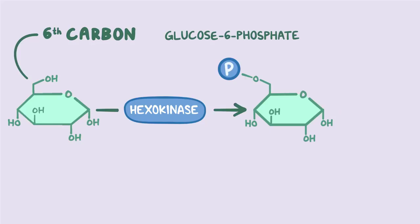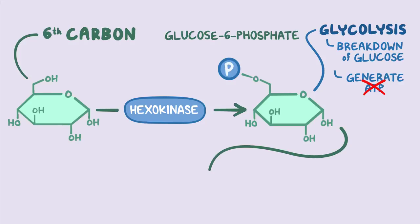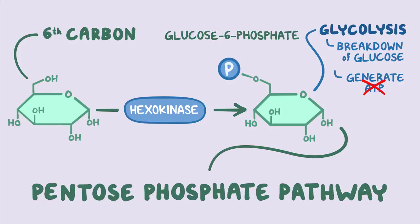From there, the cell has the option to take glucose through a metabolic pathway called glycolysis, which is the breakdown of glucose to generate ATP. But if the cell doesn't need ATP, glucose can be used to make some other useful products by entering an alternative metabolic pathway called the pentose phosphate pathway.